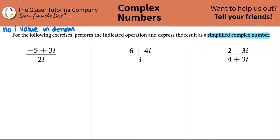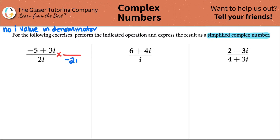So the question is: how do we get rid of this i value in the denominator? The rule of thumb is that you're always going to multiply whatever is in the bottom by the opposite. So I'm going to multiply not by two i — the opposite of two i would be a negative two i.